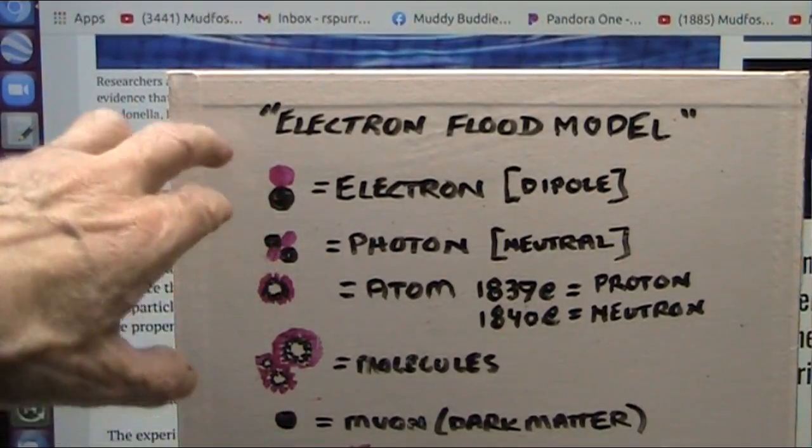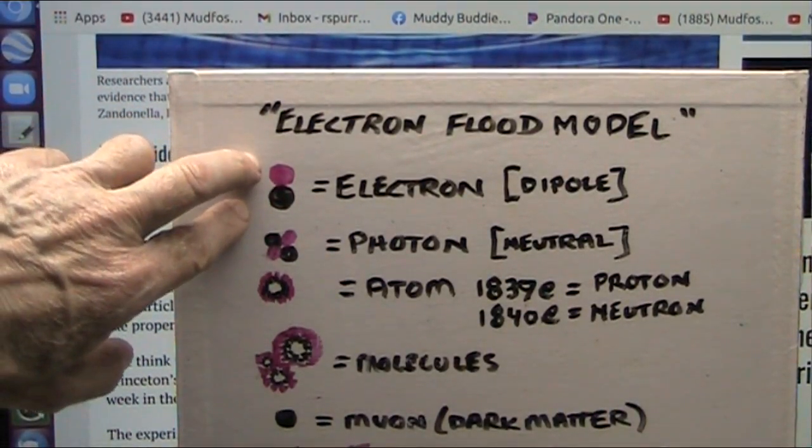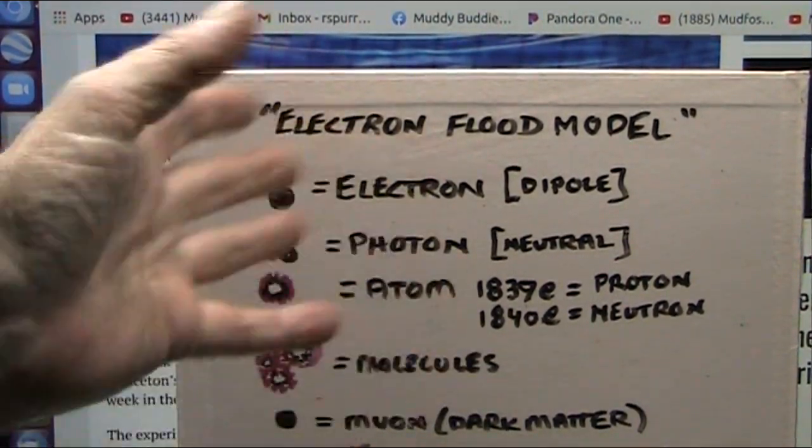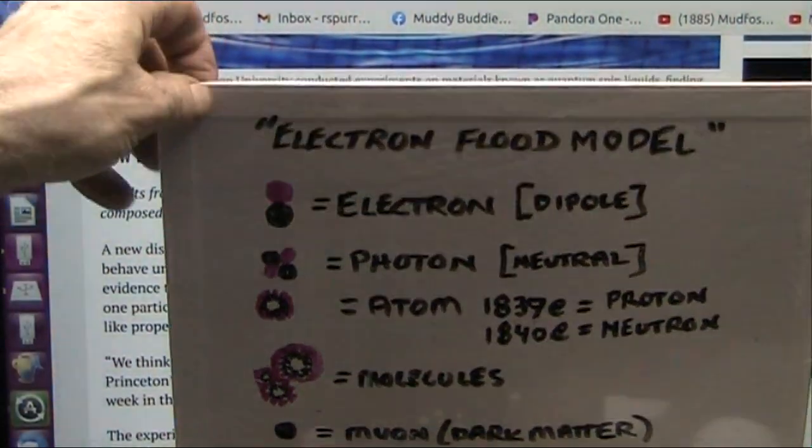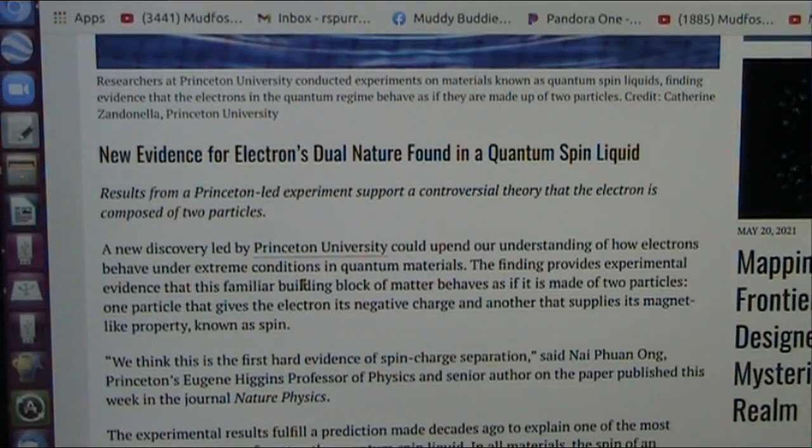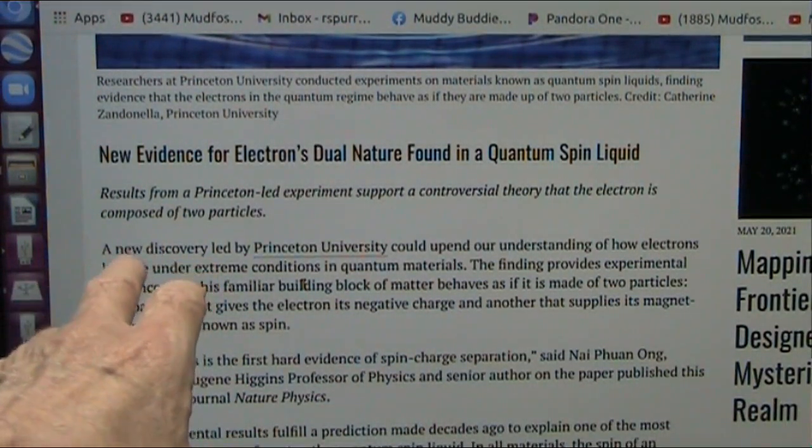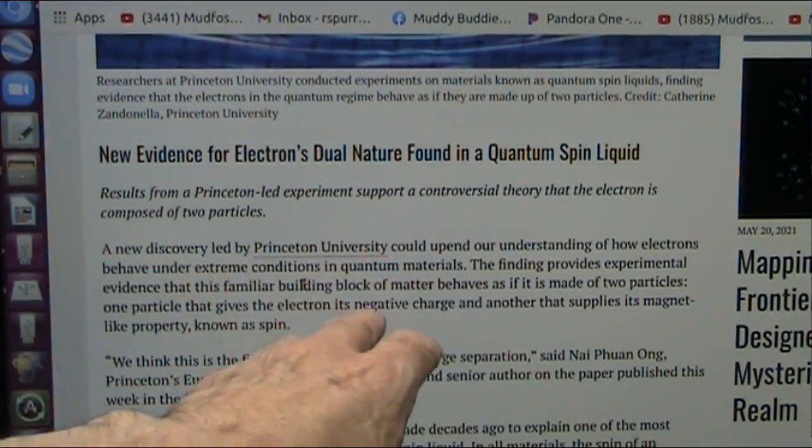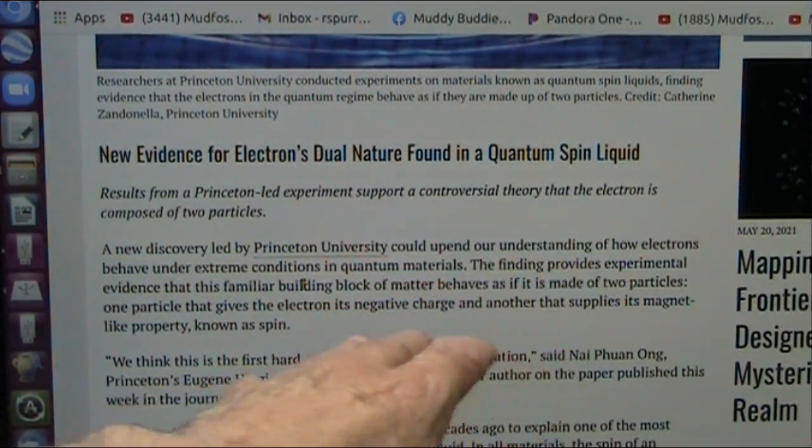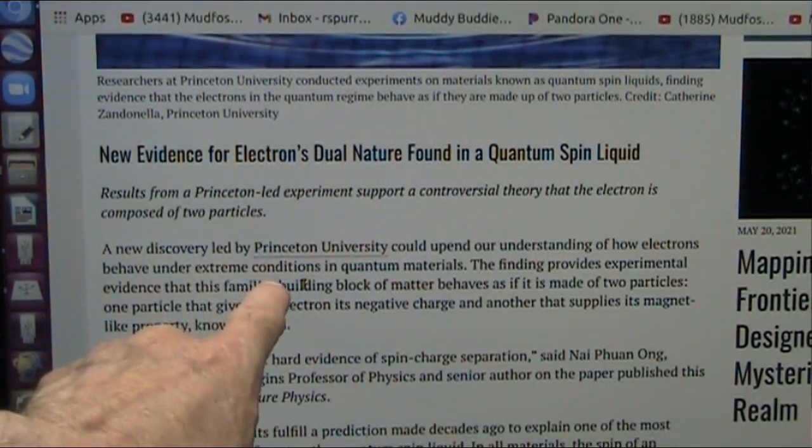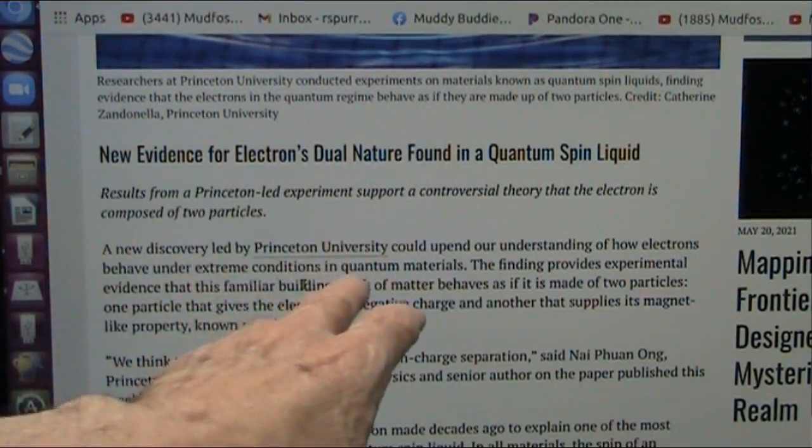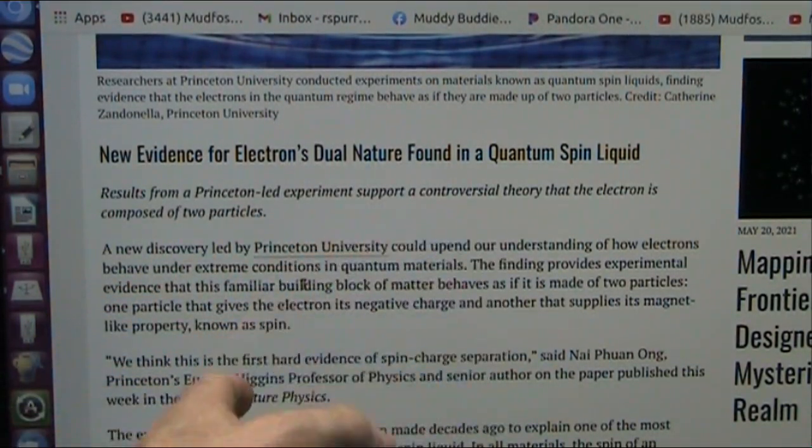Okay, before I get in too deep, electrons make everything there is. Excess electrons are heat. That's all it is, heat and electricity. Now, they claim that a new discovery led by Princeton University could upend understanding of how electrons behave under extreme conditions. They're talking about extreme in quantum materials. Everything's quantum.